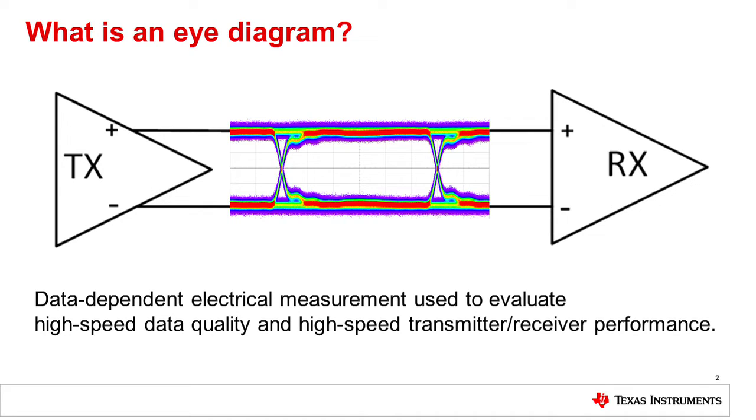In order to begin the discussion on eye diagrams, we must first understand, what is an eye diagram? Simply put, an eye diagram is a data dependent electrical measurement used to evaluate high speed data quality. An eye diagram is measured in the time domain, and as with most time domain electrical measurements, variation in the measurement will occur in every set of samples. By collecting these variations in the signal, more information about system performance can be determined. An eye diagram is constructed in this way, which we will discuss later.